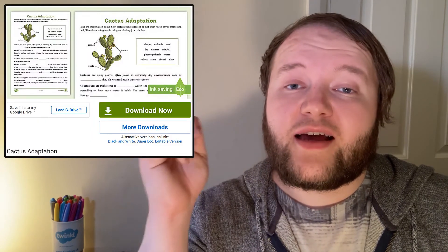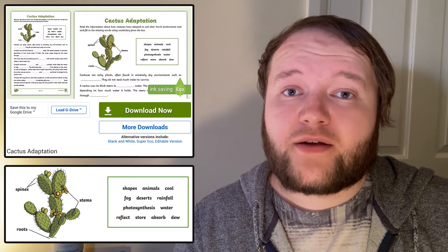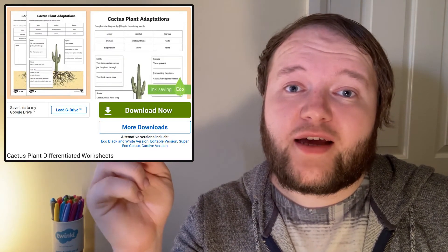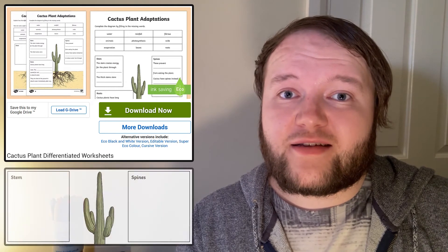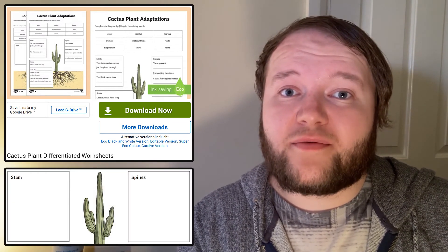Once your learners have found out all there is to know about cacti, test their knowledge with this adaptation worksheet. Can they use the word bank of scientific vocabulary to fill in the missing words? Or, for a trickier challenge, your learners can try this differentiated worksheet and write in full sentences about how roots or spines aid the cacti's survival.